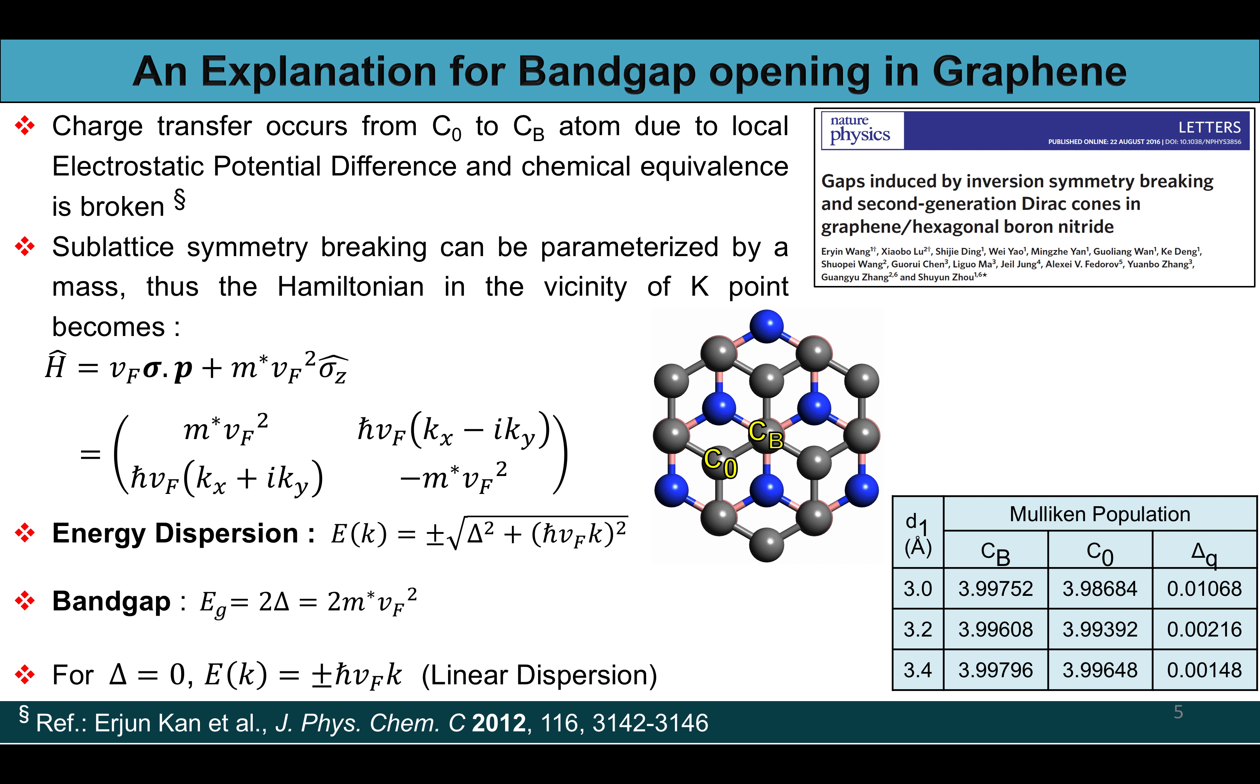This sublattice symmetry breaking can be parameterized by a mass term which results into this tight binding Hamiltonian as shown here thereby producing this energy dispersion relation. Here we get the energy dispersion relation E(k) as plus minus square root of delta squared plus h-bar vF k whole squared.